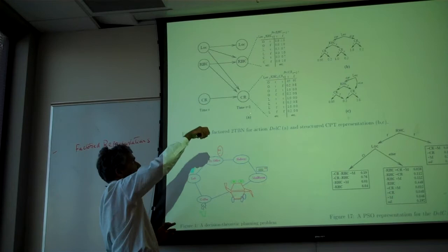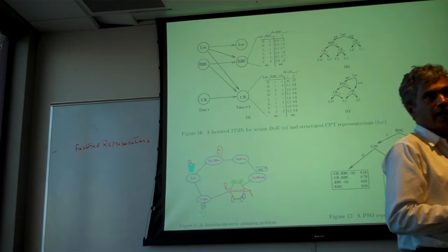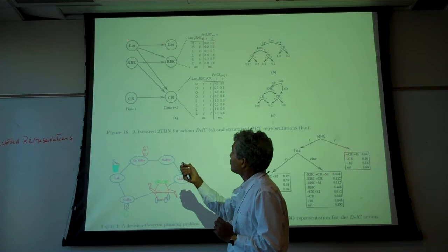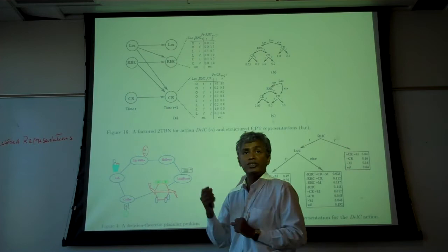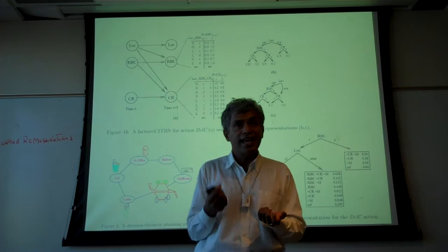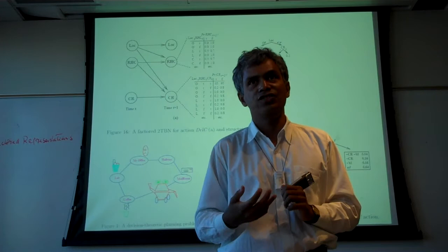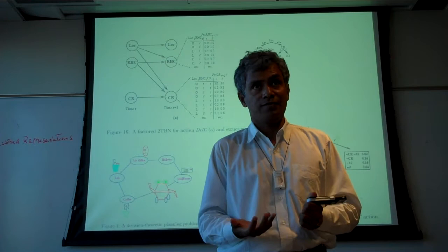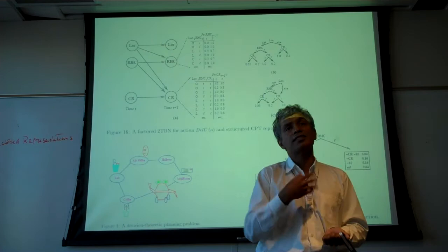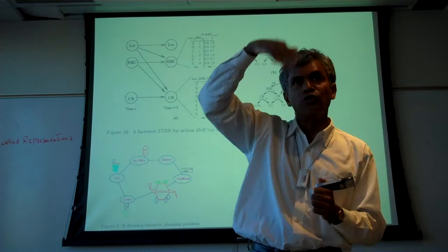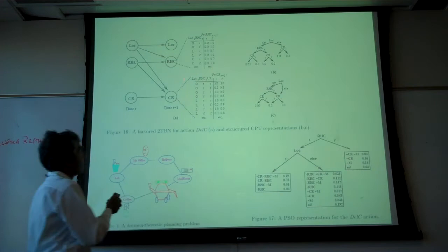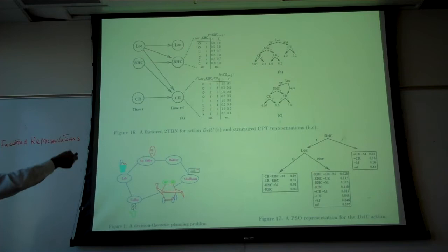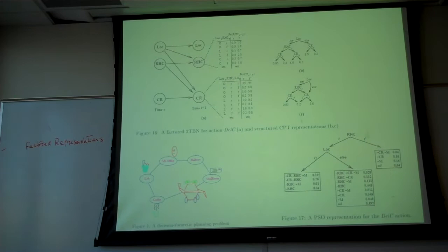In 2TBNs, the value of current state variables depends only on previous state variables. If you had links from location_t to RHC_t within the same time slice, those would represent intra-state axioms — probabilistic correlations within the state variables of a given state. Without such links, any correlations come only through the previous time slice variables.